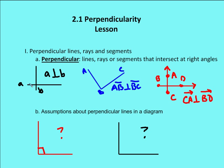So we know that in this case, on the left-hand side in black, I have line A and line B, and I'm given that A is perpendicular to B — this symbol here means perpendicular. So A is perpendicular to B, which means that they intersect at right angles.